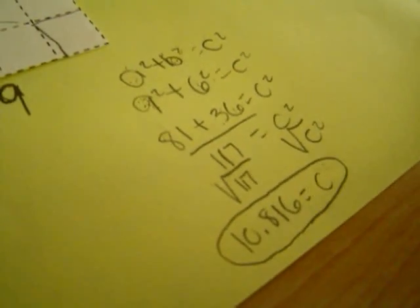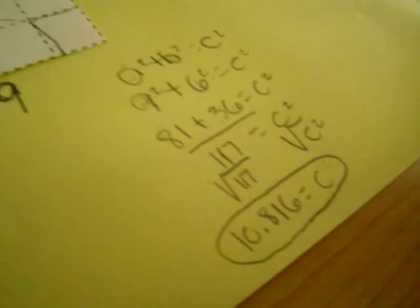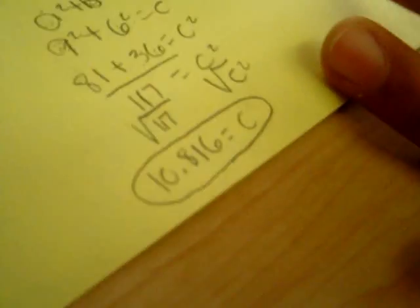Once that's finished, you have to square root it, and you get the answer to C. You're not finished once you get the answer, because you have to put it up here and make sure it's the longest side, and put the unit value.